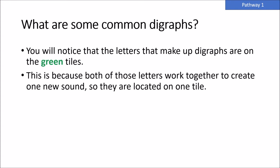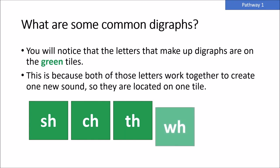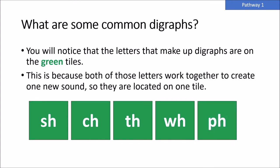So what are some of the common digraphs? SH, which says 'shh.' CH, which says 'ch.' TH, which says 'th' or 'v.' WH, which says 'wh.' And PH, which says 'f.'